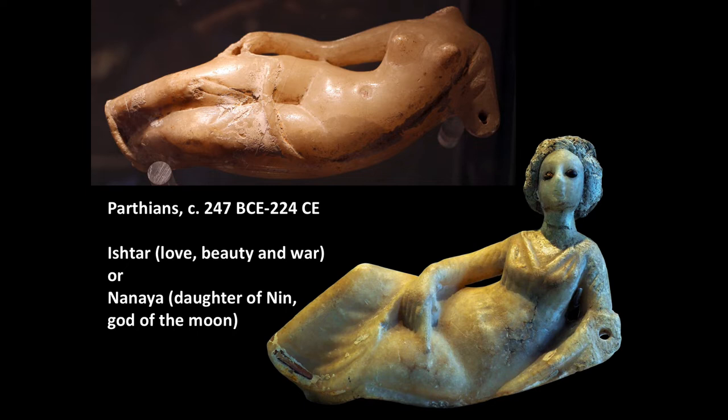What we're seeing here and what we're going to talk about in this case study are a couple of different types of representations for a Parthian goddess. The goddess we're looking at could be identified either as Ishtar, the goddess of love, beauty, and war. There's a long tradition of her worship in ancient Mesopotamia that carried on into the Parthian empire.